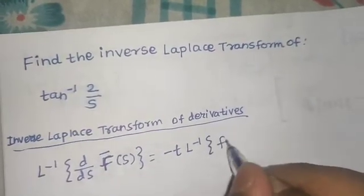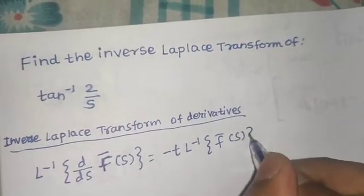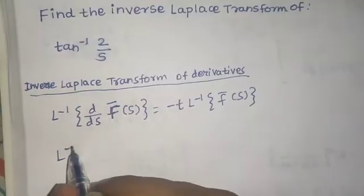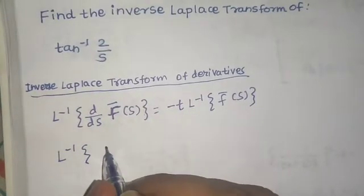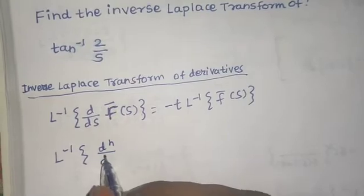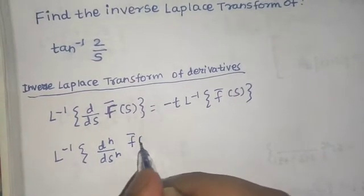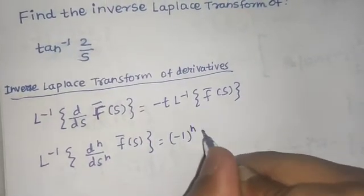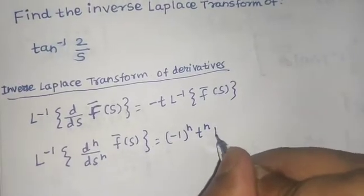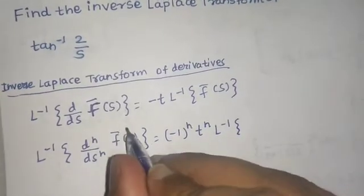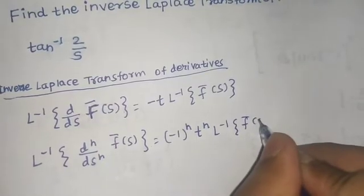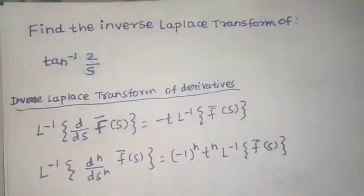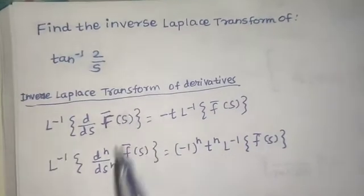This is the formula. You can generalize this formula also: if we need to find the Laplace inverse of any nth derivative, that can be written as minus 1 to the power n, times t to the same power, times the Laplace inverse of the function. It might look a bit difficult at first look, but let's apply this to this question.